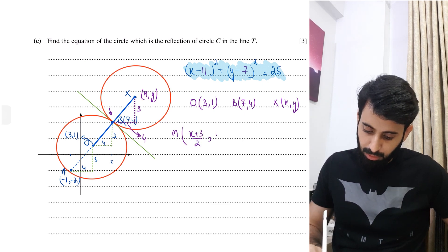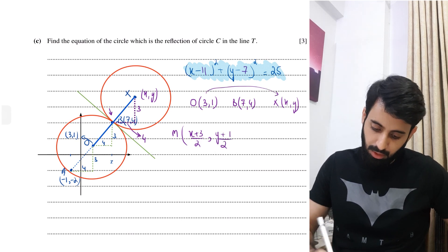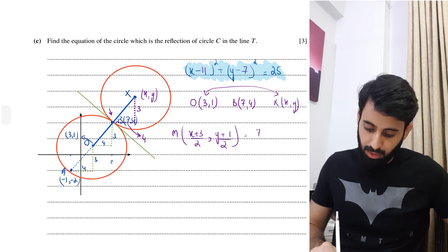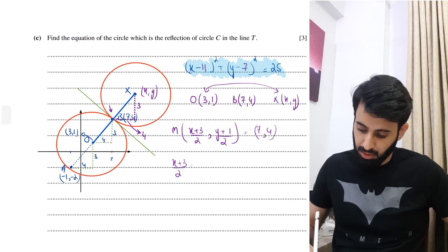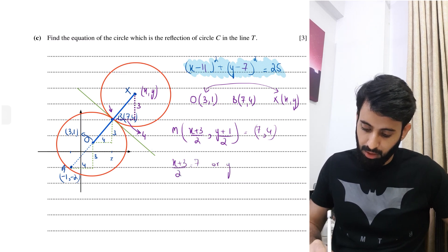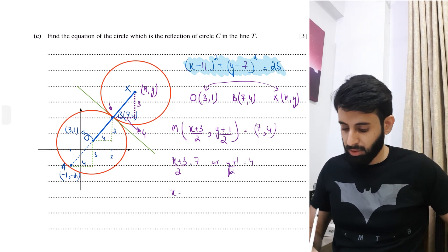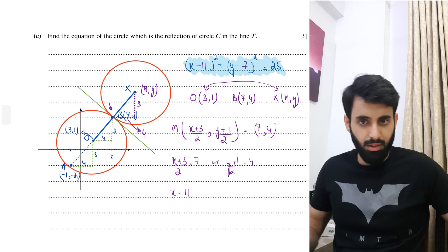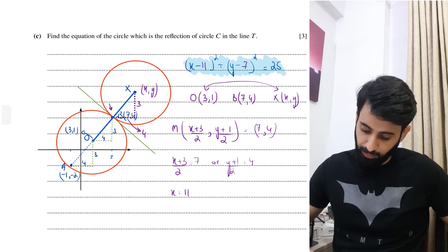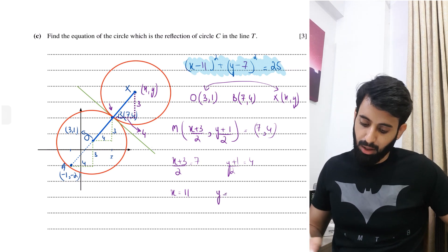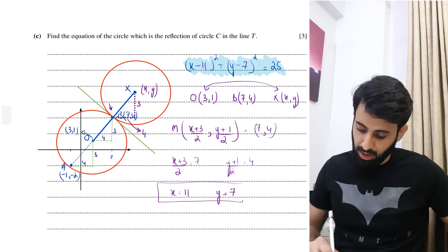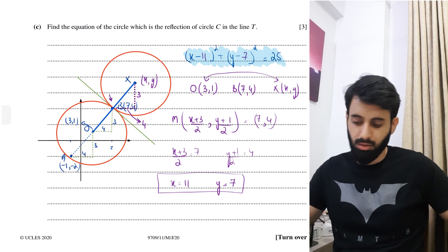Setting up midpoint equations: (X plus 3) over 2 = 7, so X = 14 minus 3 = 11. And (Y plus 1) over 2 = 4, so Y = 8 minus 1 = 7. You get the same center: 11, 7. Both methods work equally well, so use whichever clicks first.